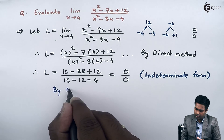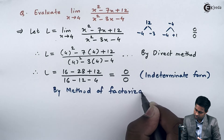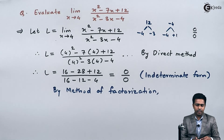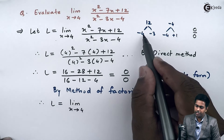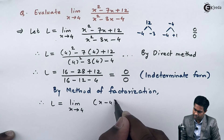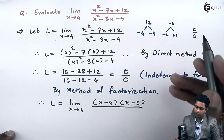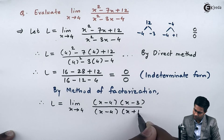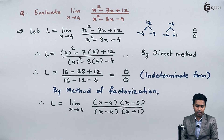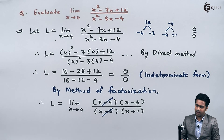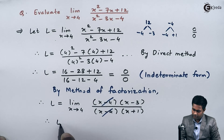By the method of factorization, the numerator factors as (x - 4)(x - 3), and the denominator factors as (x - 4)(x + 1). The common factor (x - 4) appears in both numerator and denominator and can be cancelled, leaving (x - 3) over (x + 1), for which we again apply direct method.